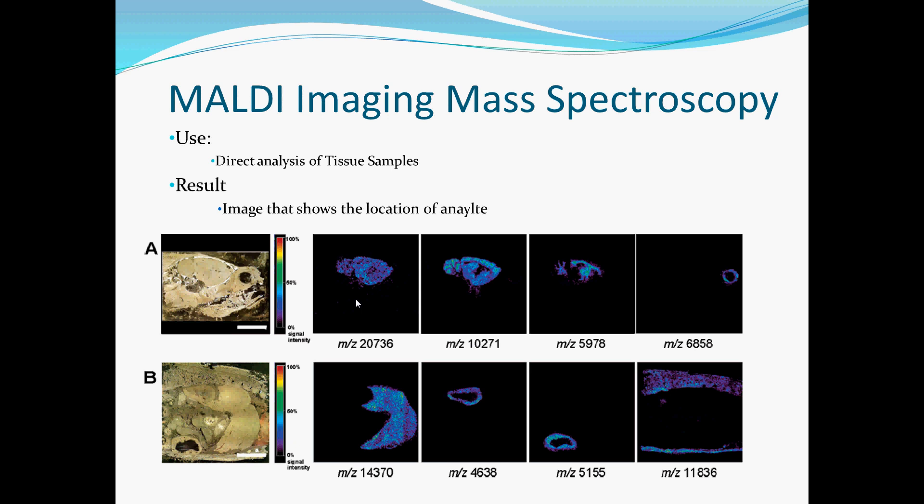It is to note that these high mass-to-charge ratios are most likely peptides or proteins within this tissue sample. Since you can specify a very specific mass-to-charge ratio, you can find out where very specific peptides, proteins, or other compounds are found within a tissue.